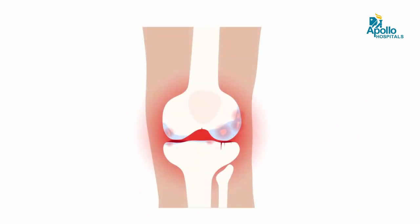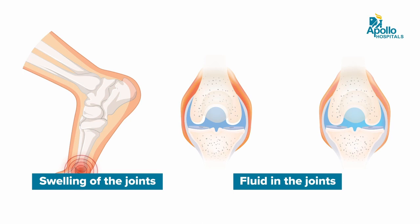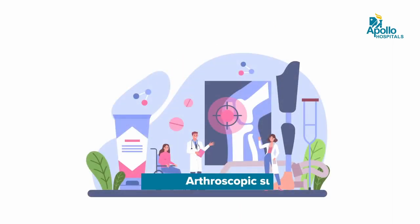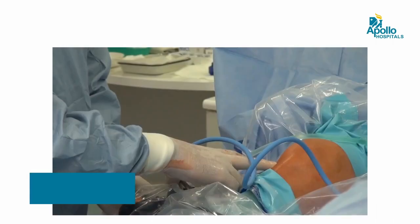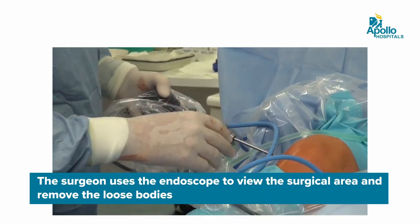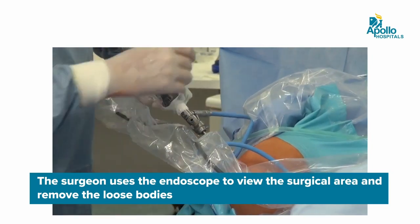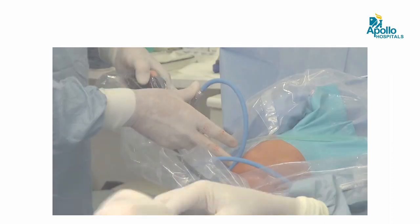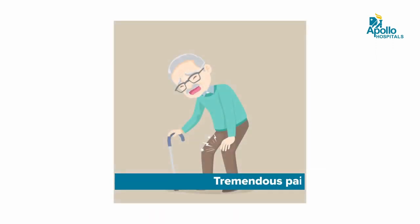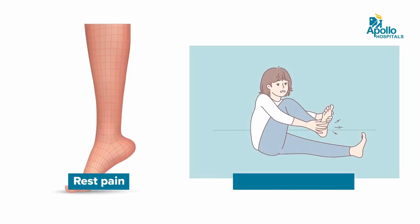PRP may also help improve cartilage repair. In stage 3, where there is swelling, fluid in the joint, and possibly loose bodies, the condition can be treated with arthroscopic surgery — a keyhole surgery where we insert an endoscope into the knee joint and use laser equipment to remove loose bodies, debris, and fluid, which relieves symptoms. In stage 4, severe osteoarthritis means pain on walking, pain at rest, and pain at night — your quality of life is significantly affected and you are experiencing pain all the time.